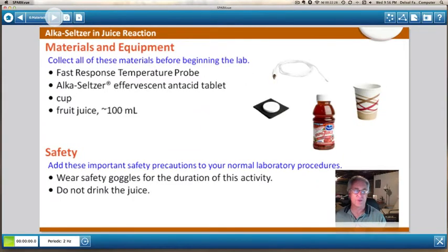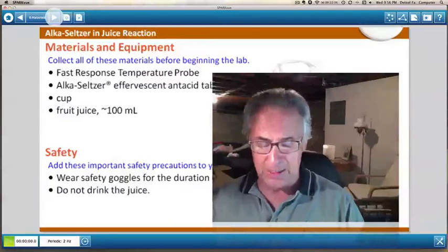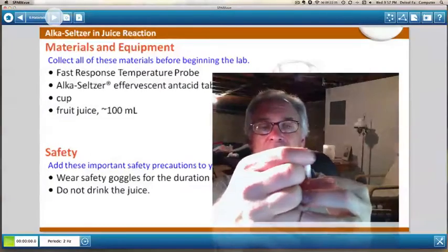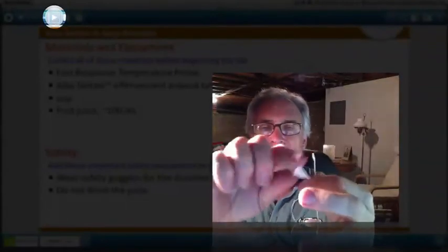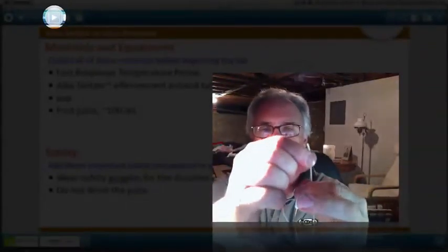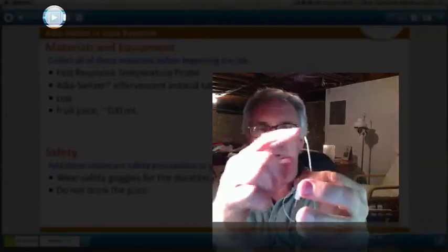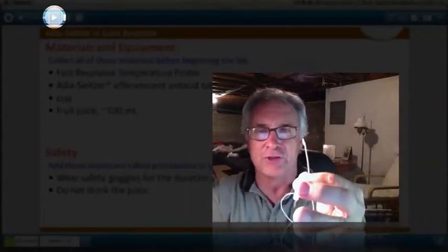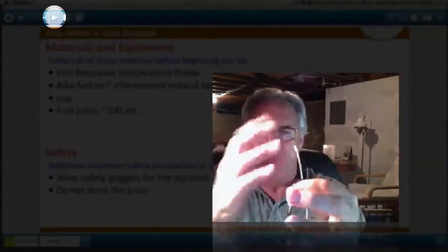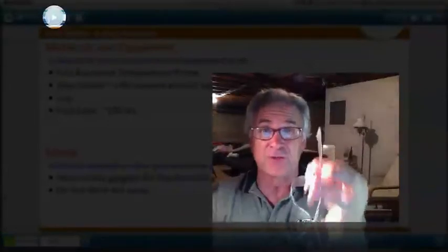So now you're going to the next page. And there's all the materials. For instance, one of the things you're going to need is a fast response temperature probe. And it looks like this. And you can see that this particular jack goes into the front of your data logger. This thing right here is the probe that is going to go into the juice. And that's the thing that's going to record the temperature. So that's a fast response temperature probe.